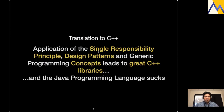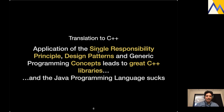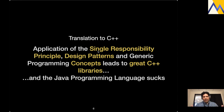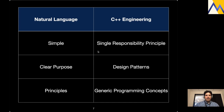What we're going to talk about is encapsulated in a quotation by the founder of the conglomerate we call Visa. He said something that really struck a chord: 'Simple, clear purpose and principles give rise to complex and intelligent behavior. Complex rules and regulations give rise to simple and stupid behavior.' Let me translate that to C++ engineering: the application of the single responsibility principle, design patterns, and generic programming concepts leads to great C++ libraries.